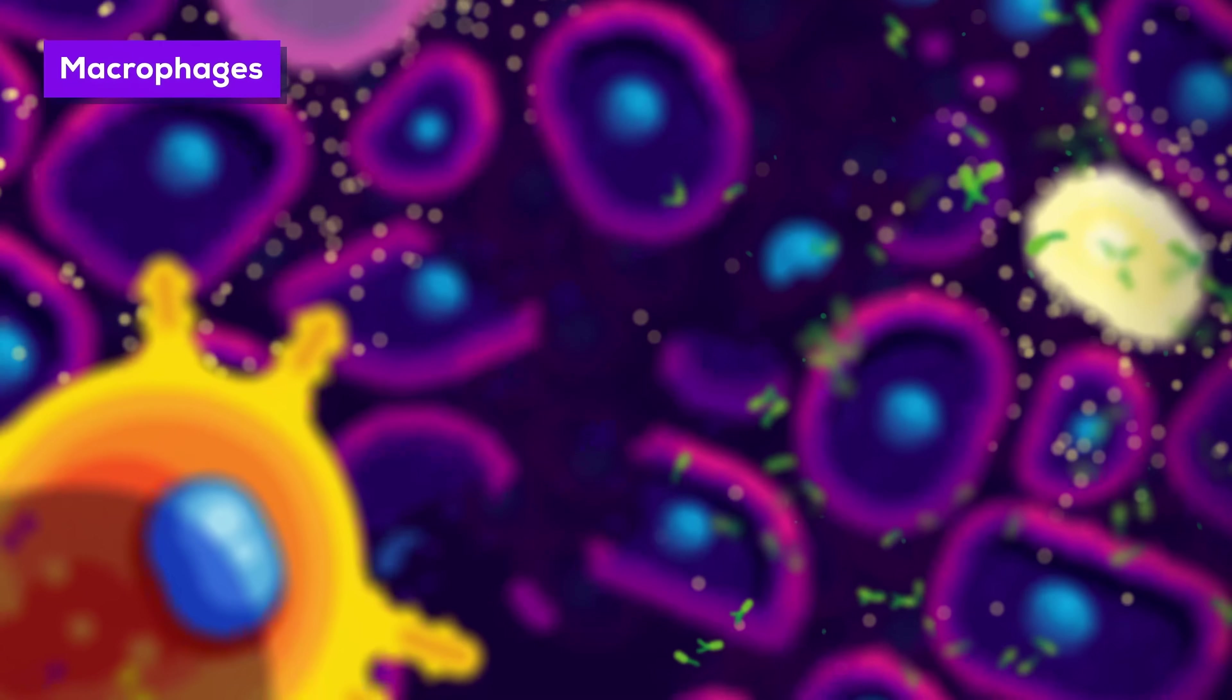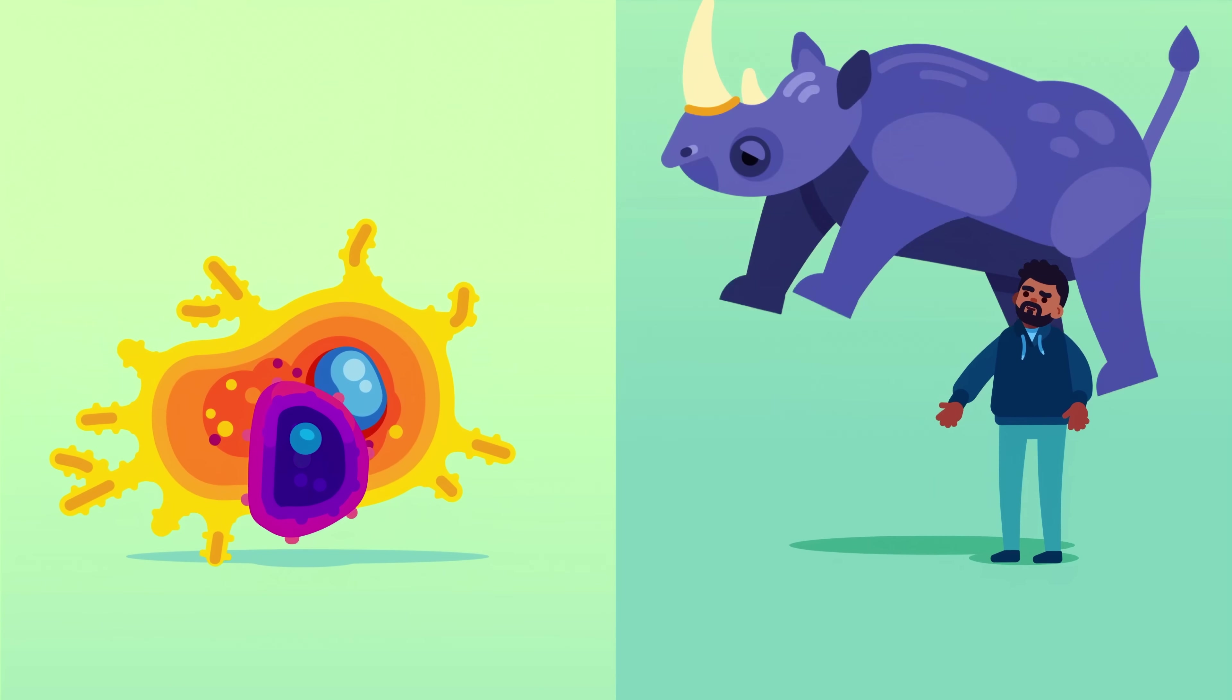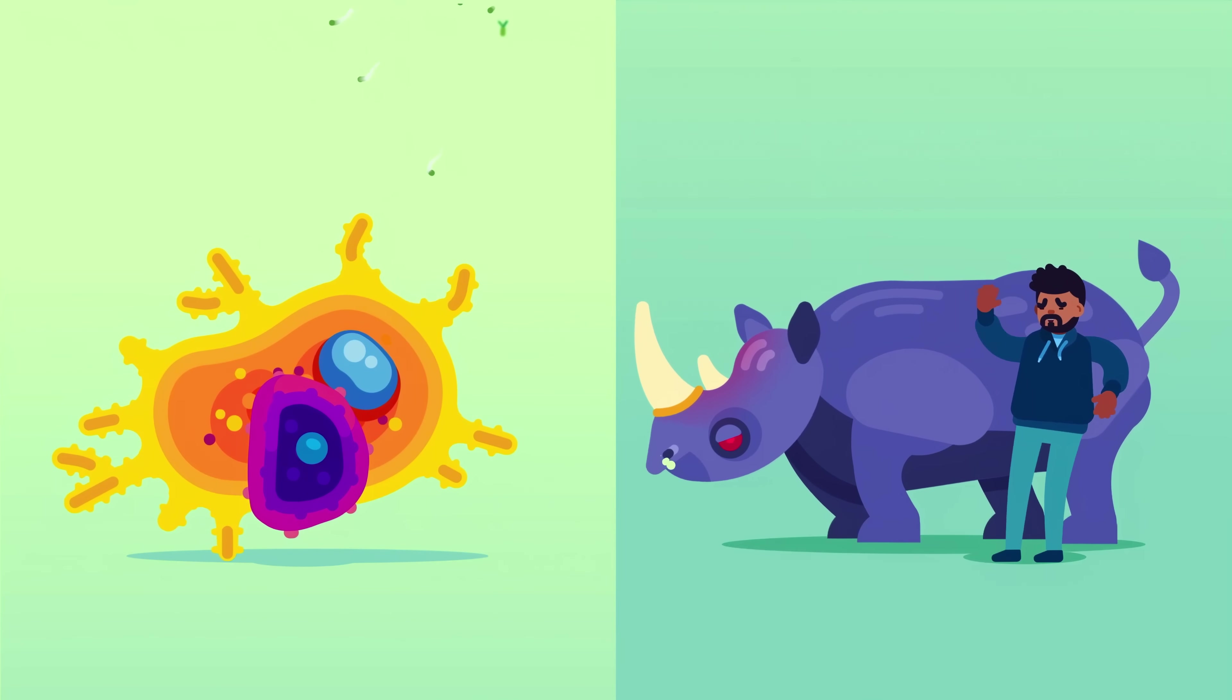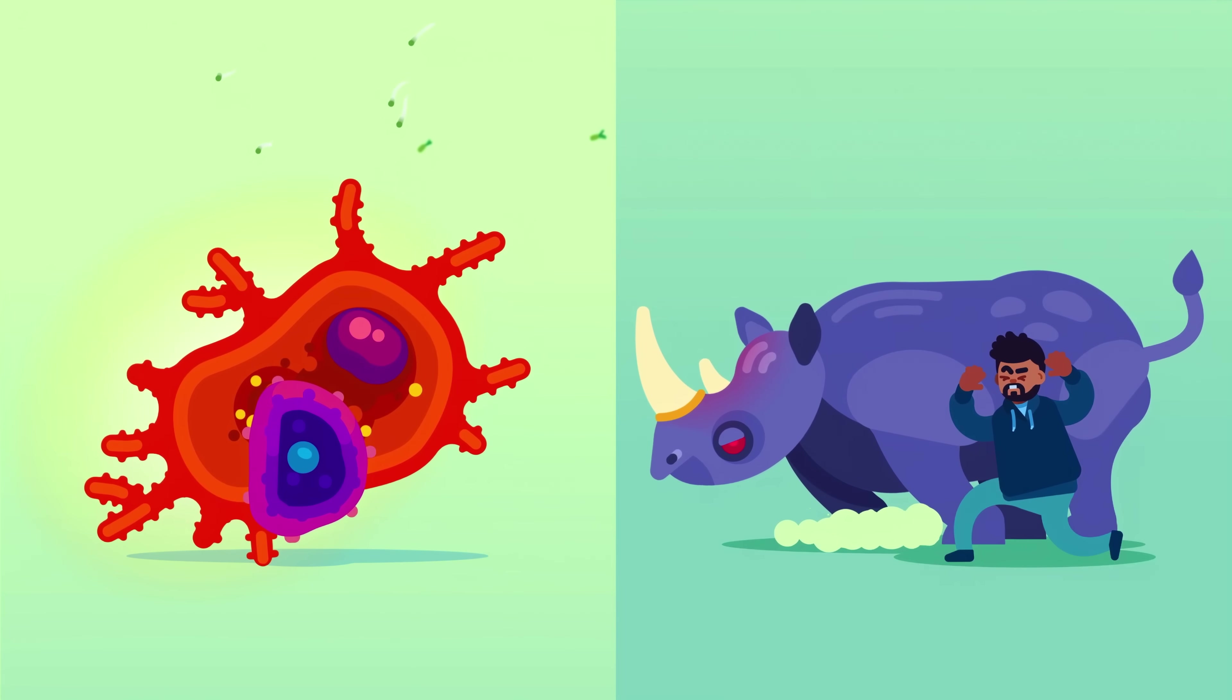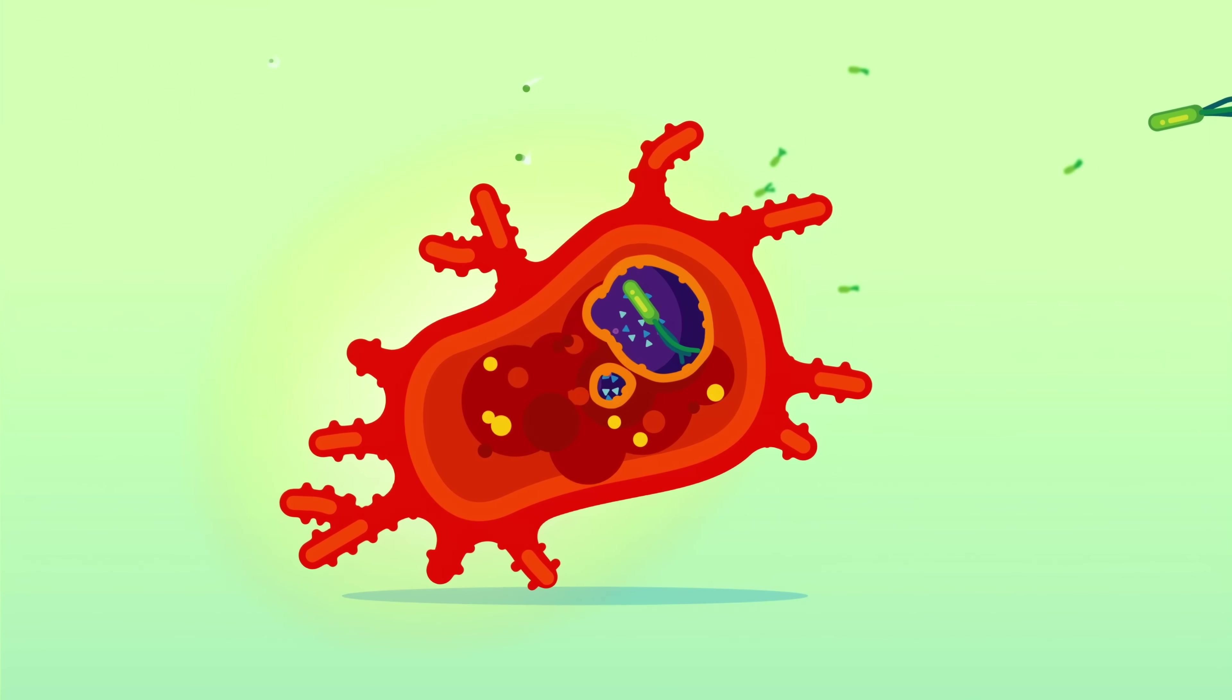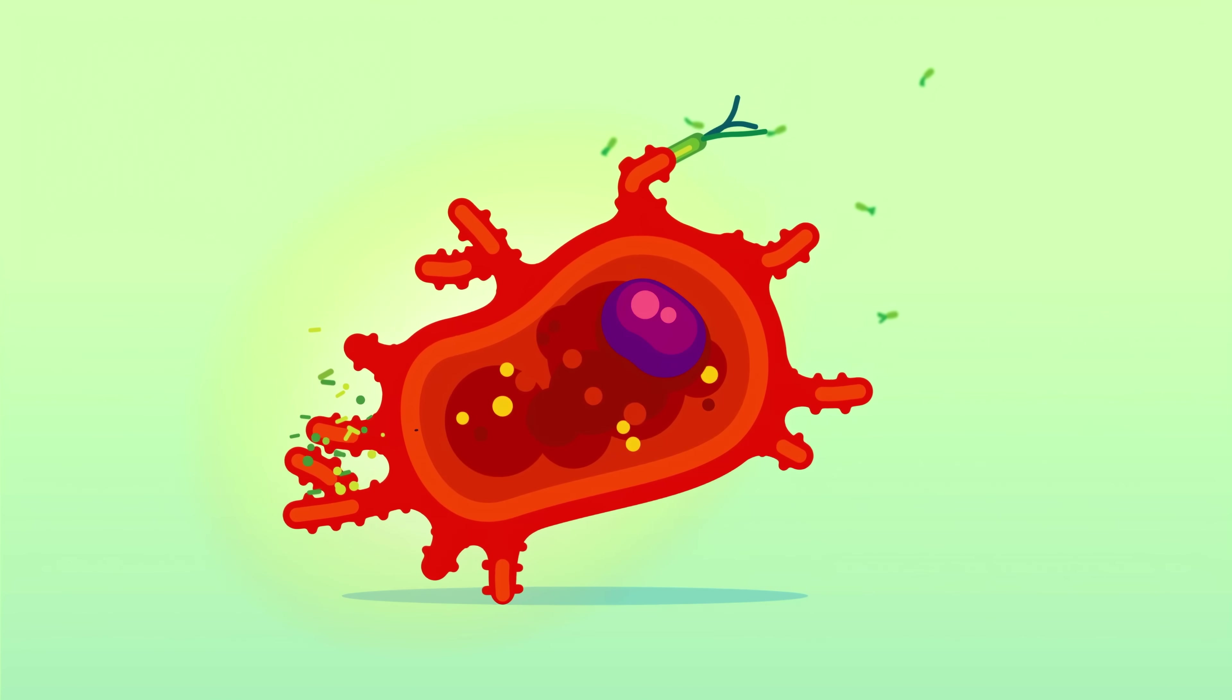The first cells to show up are macrophages. If an average cell were the size of a human, a macrophage would be the size of a black rhino. A stoic cell in principle, but you wouldn't want to annoy it. Bacteria do annoy them. Within seconds, the large cells attack and begin killing them without mercy. They stretch out parts like the arms of an octopus and grab the bacteria to swallow them whole and digest them alive.